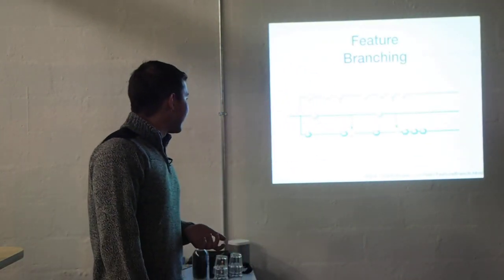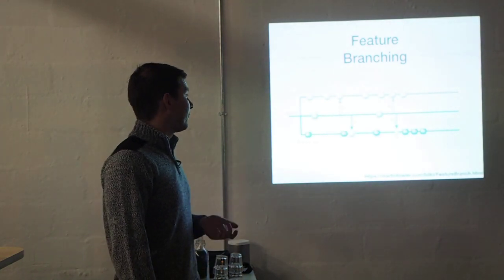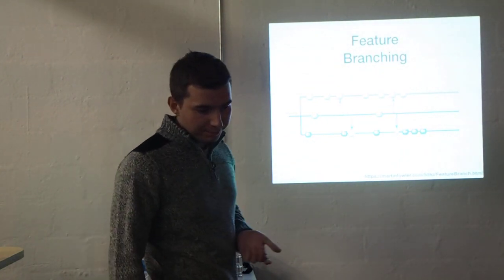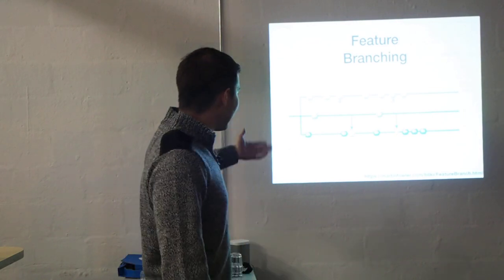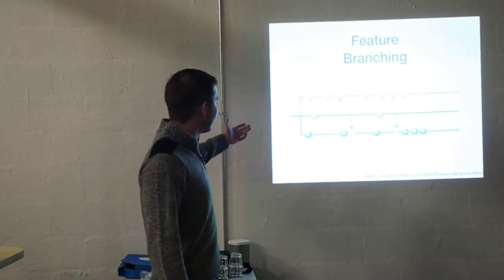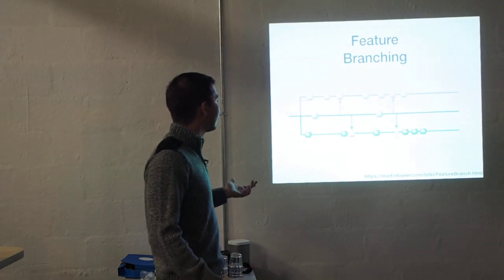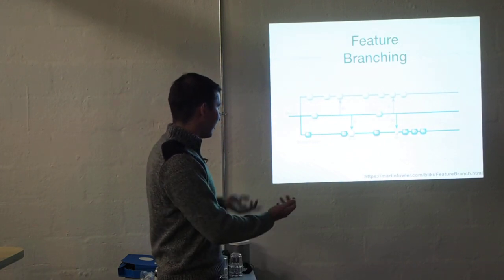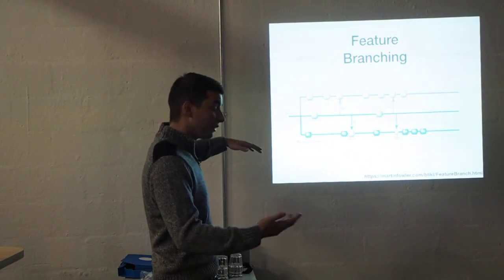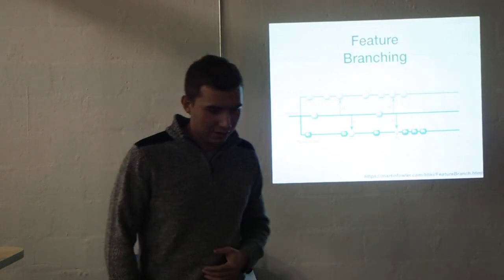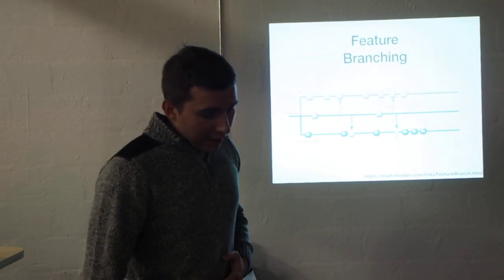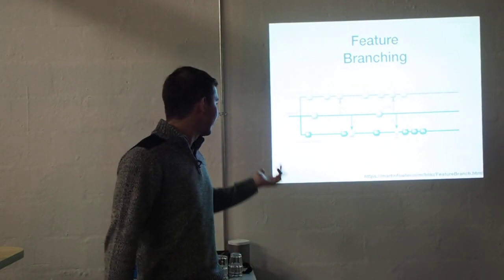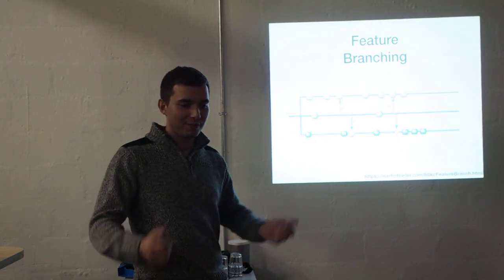A lot of you will be familiar with feature branching. In this diagram you see we have two developers — Professor Plum and Reverend Reed. You have a mainline, you have your master, and you have two developers each committing on their own branches and pulling from the shared mainline. In feature branching specifically, these branches might be a feature — Professor Plum could be working on a page, Reverend Reed could be working on a new database. These are features and we merge them back in when they're ready.